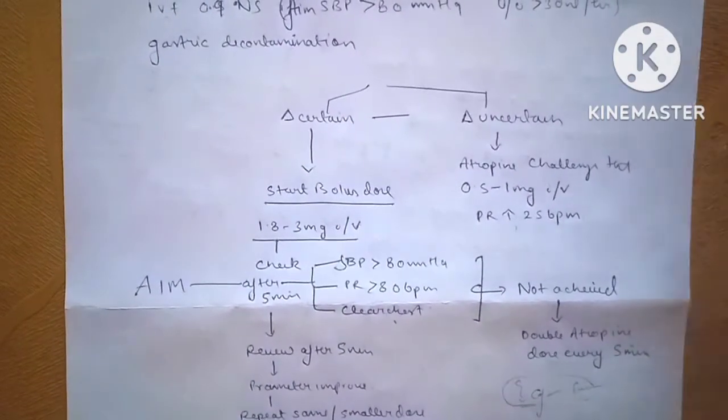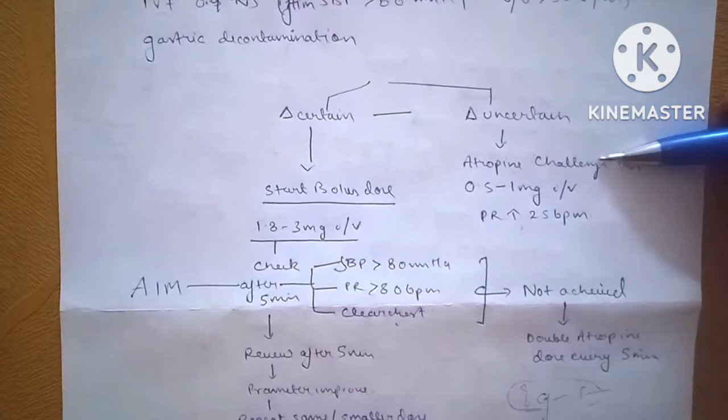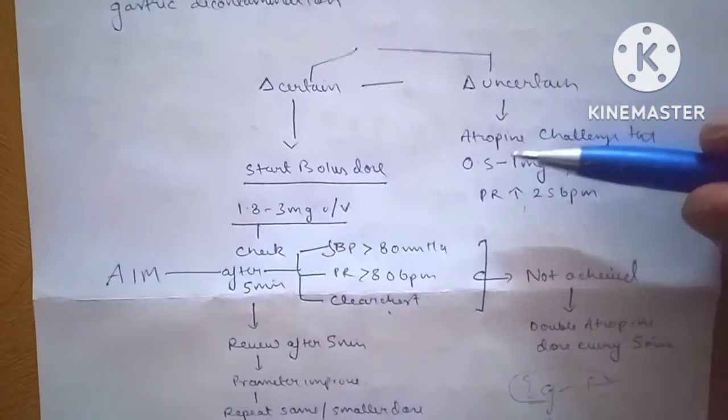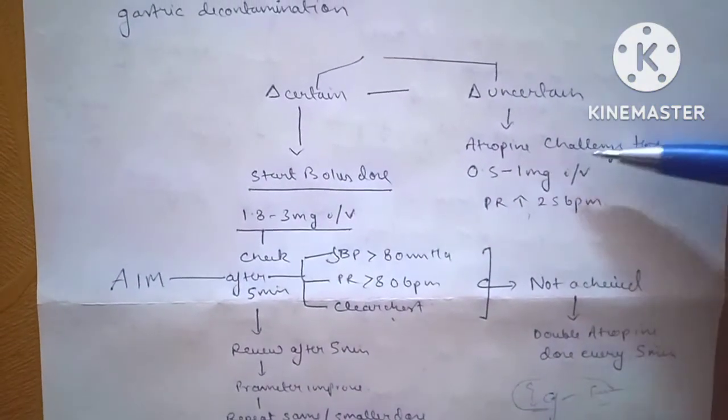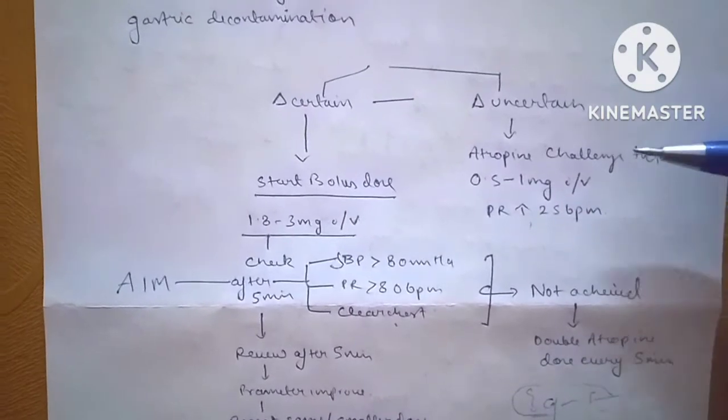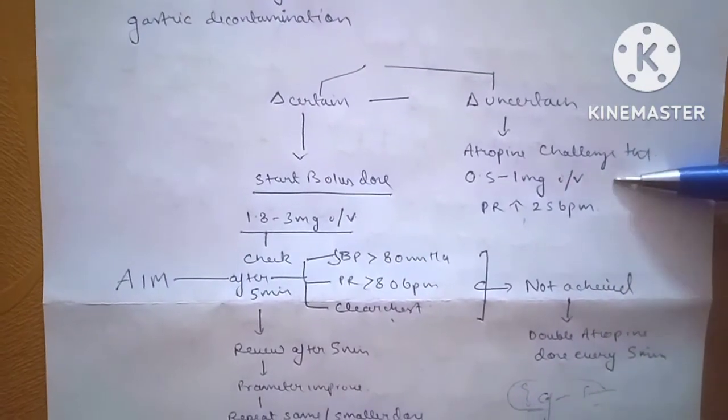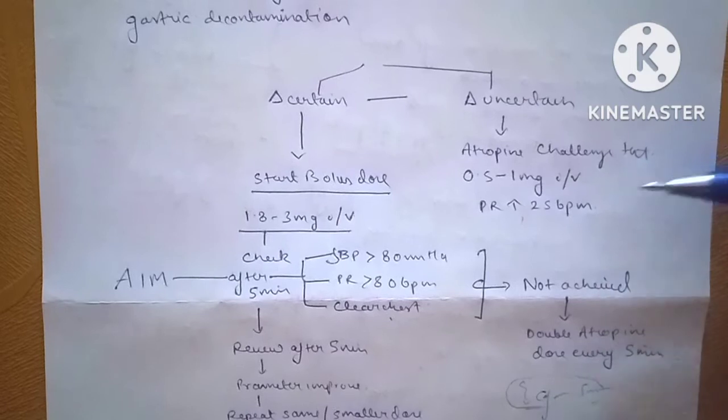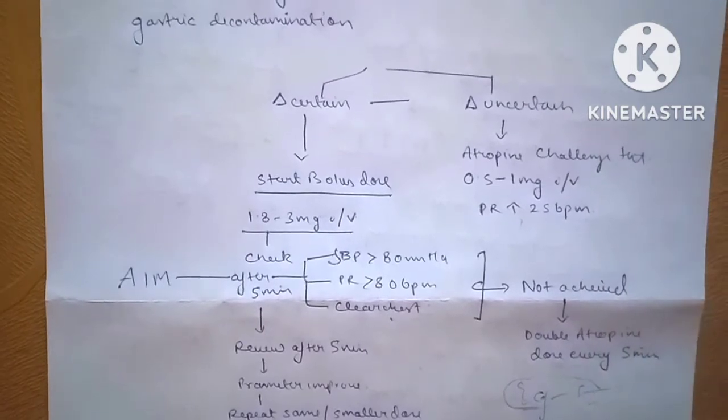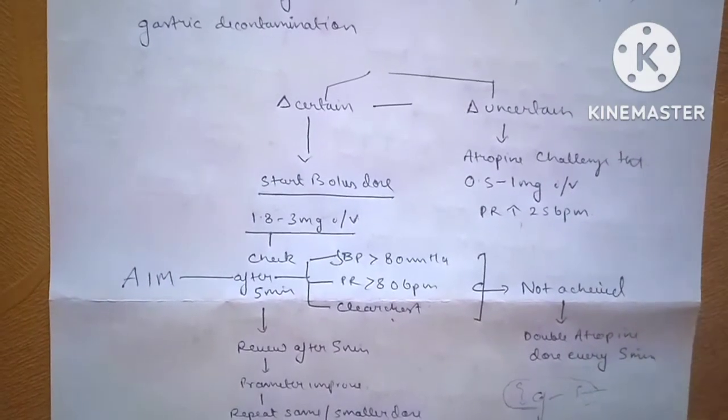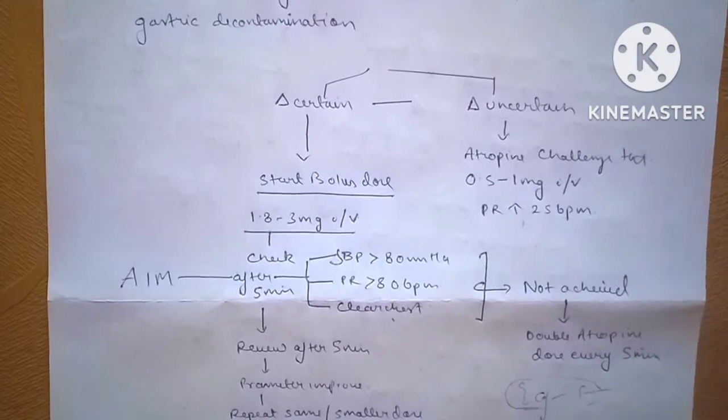In cases where we have an uncertain diagnosis of OP poisoning, we can do an atropine challenge test that includes giving 0.5 to 1 mg IV atropine and looking for increase in heart rate by 25 beats per minute or skin flushing. If these two things occur, it might indicate there is no OP poisoning at all or the poisoning is very little.